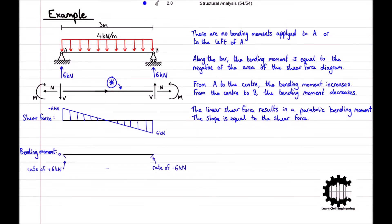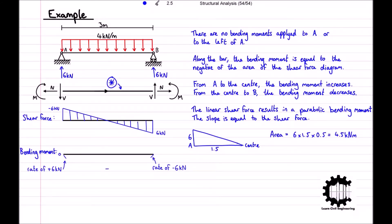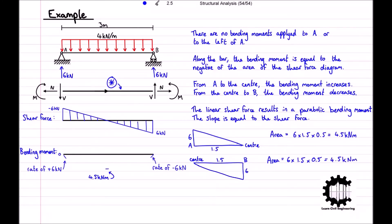As the shear force is linear, the area under the shear force diagram can be calculated using the formula for the area of a triangle. Between A and the centre, the area equals ½ × 6 × 1.5 = 4.5 kN. As the bending moment at A is zero, the bending moment at the centre equals 4.5 kNm. Applying the same process, the area from the centre to B also equals 4.5 kN, so the bending moment at B equals 4.5 minus 4.5, which is zero.